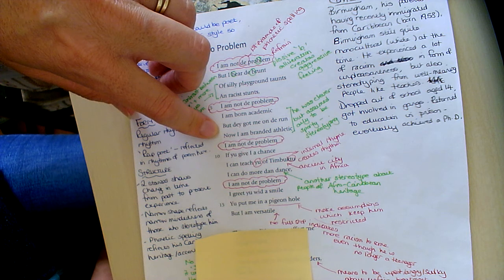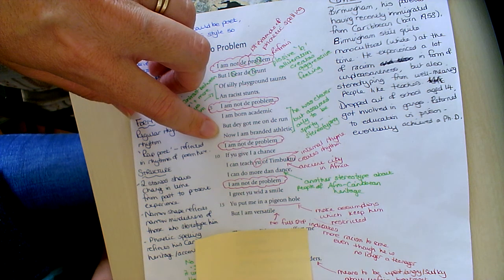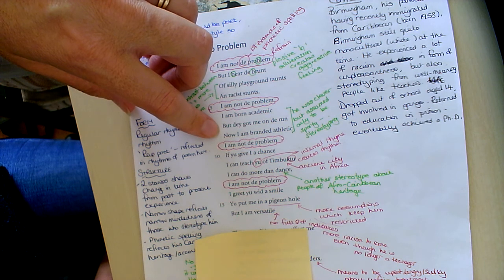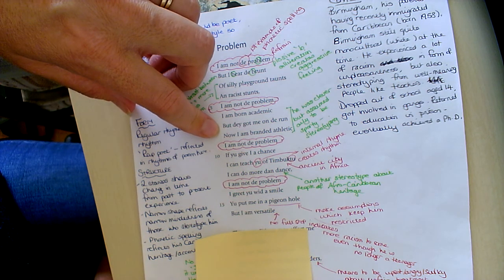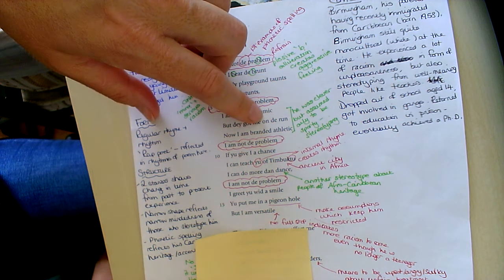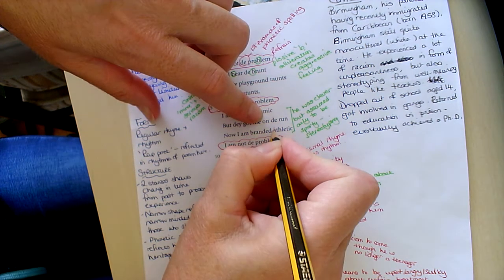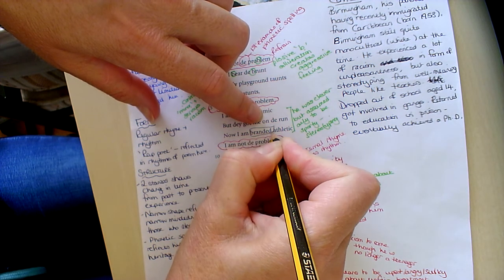Because this is a stereotype associated with young black men and women but young black men in particular, more so perhaps in the 60s and 70s but even now it's still a stereotype that might exist. Oh not very bright but he can run, he's really quick. So he says now I'm branded athletic and branded is an interesting word.